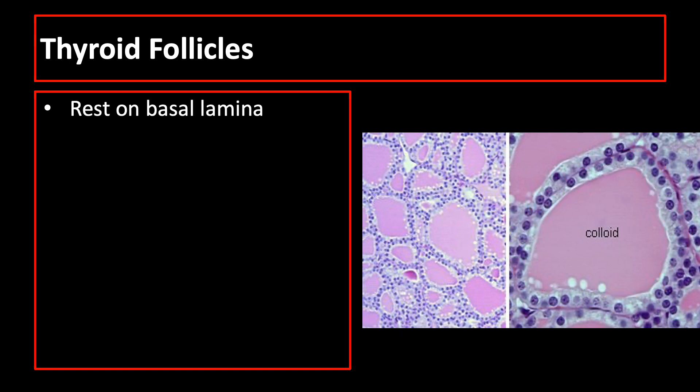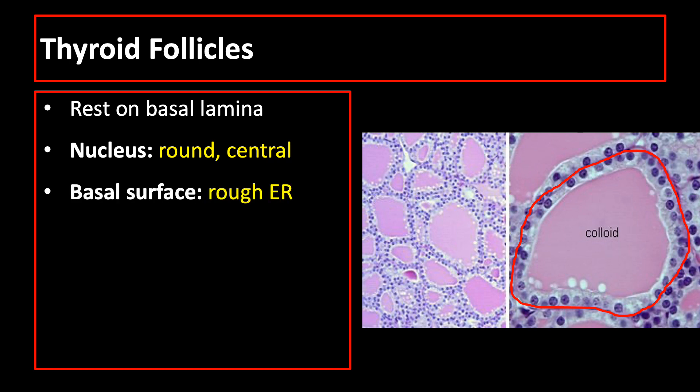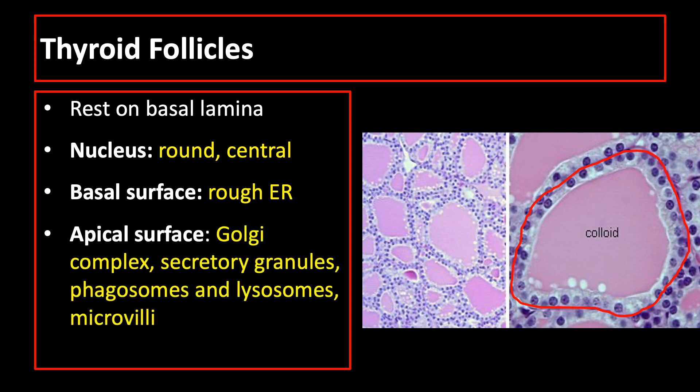Thyroid follicles rest on a basal lamina. The nuclei are round and centrally located. Basally, the cells are rich in rough endoplasmic reticulum. And apically, facing the follicular lumen, they are rich in Golgi complexes, secretory granules, numerous phagosomes and lysosomes, and microvilli.